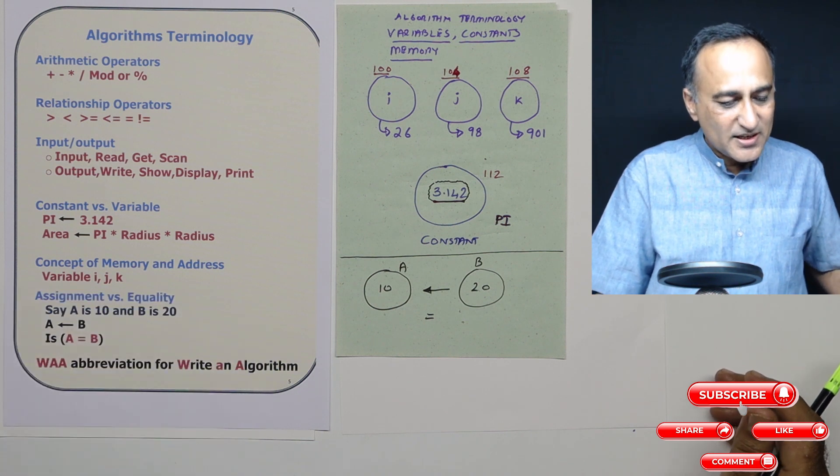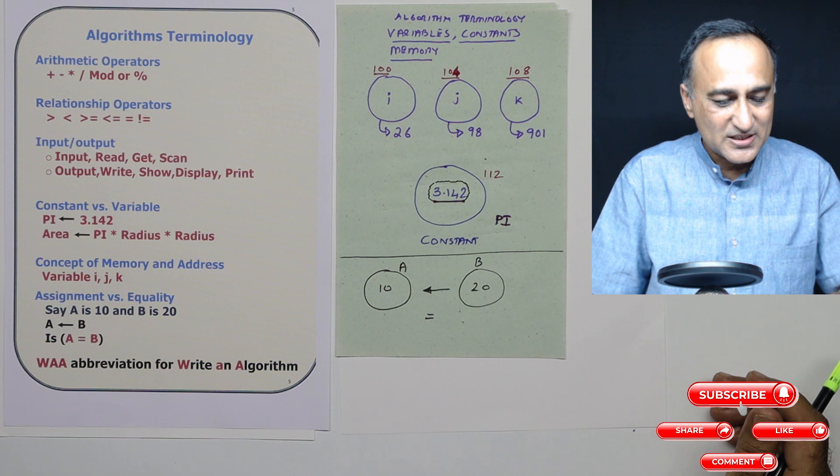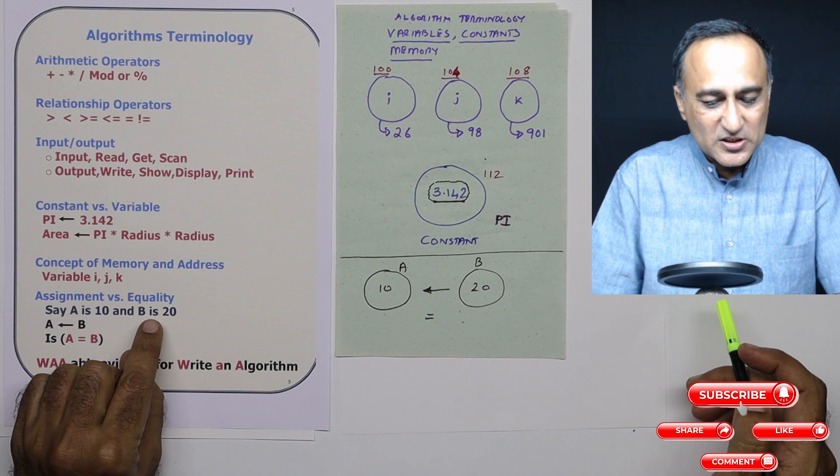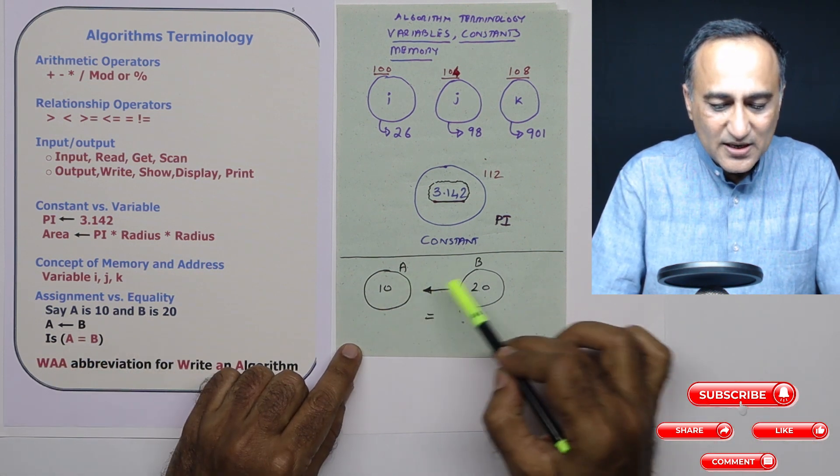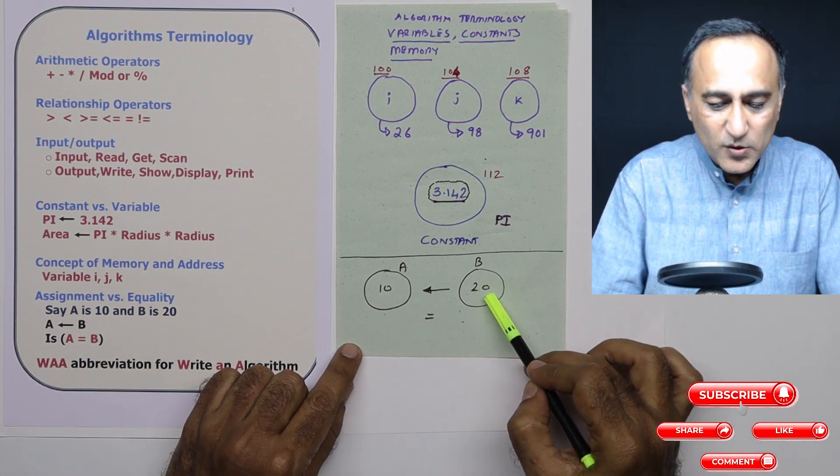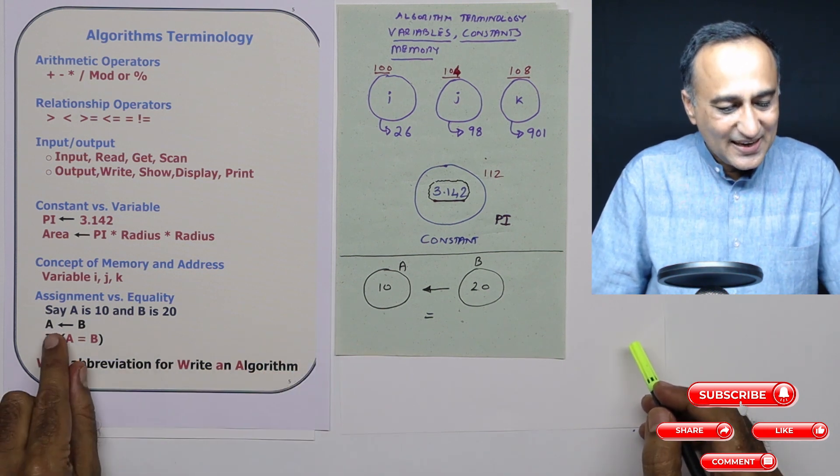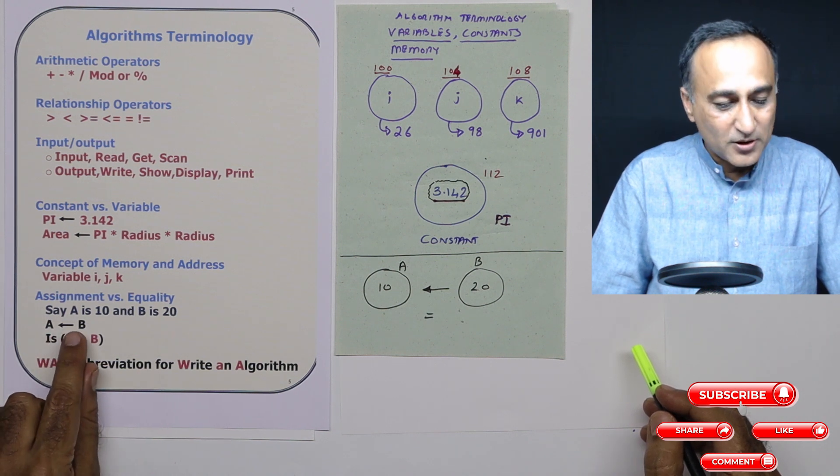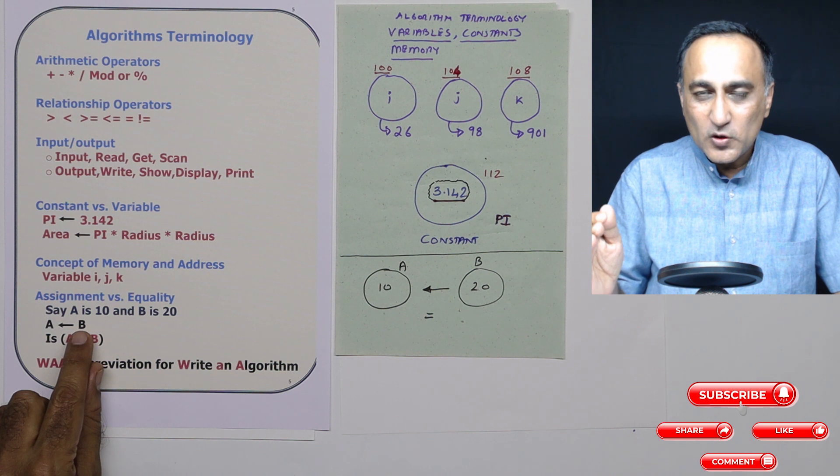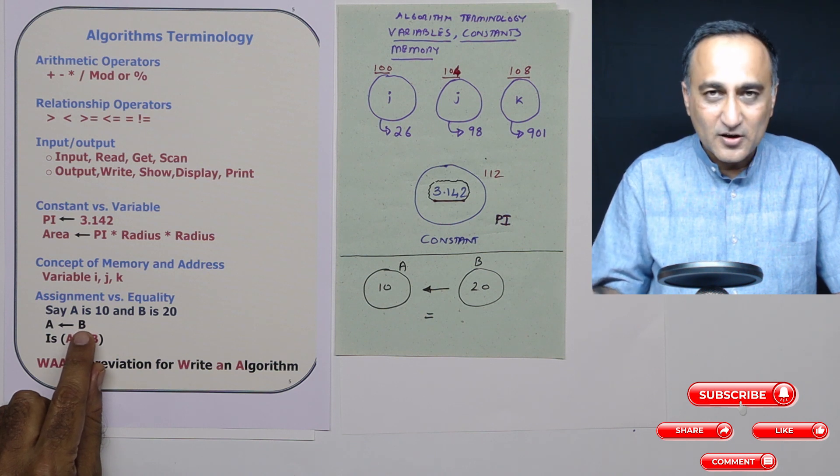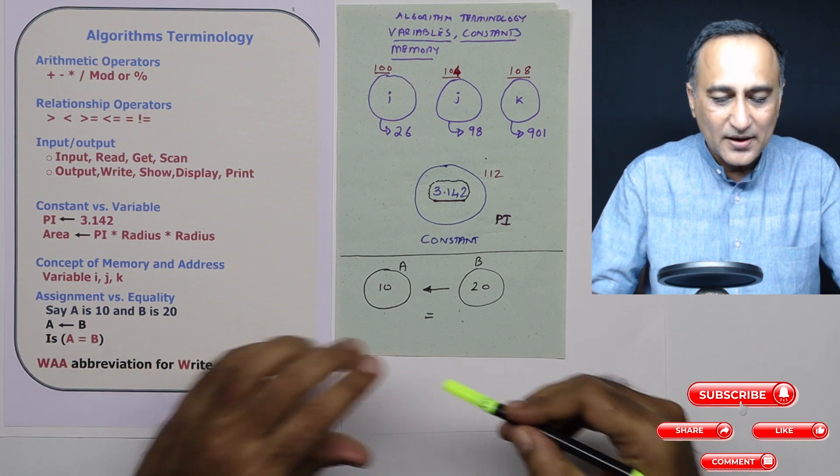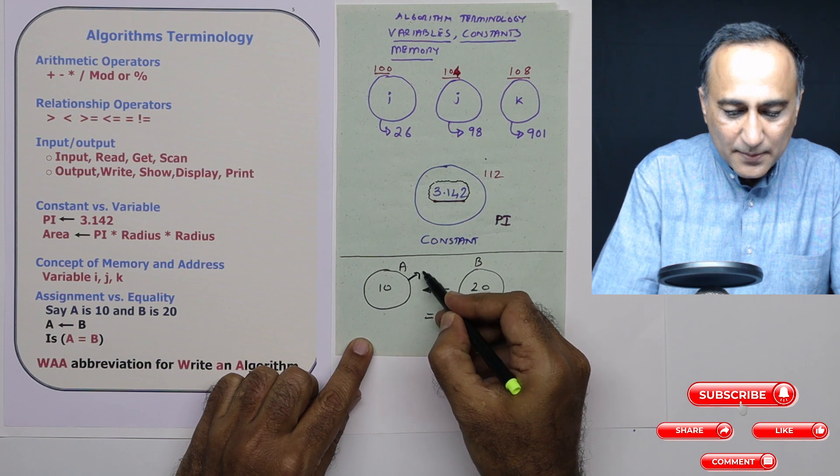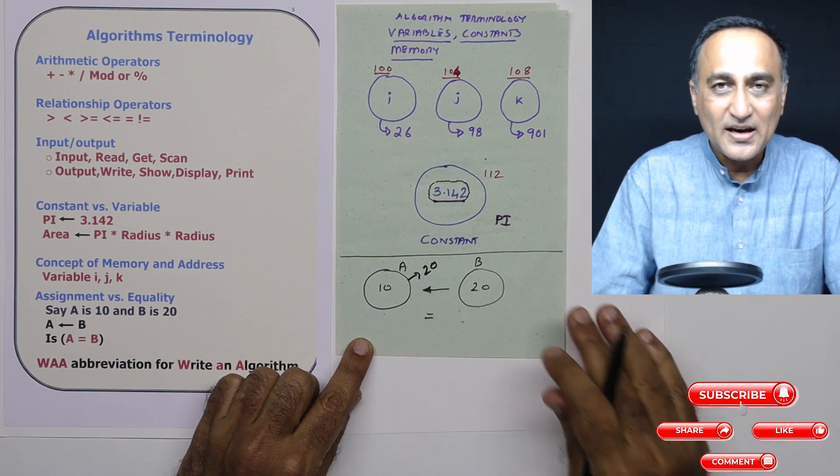Now let's try to understand one important difference between what is an assignment versus an equality. This is really important. Suppose A is 10 and B is 20. So in memory location A, the value is 10; in memory location B, the value is 20. Suppose I say A is assigned B - this arrow indicates the assignment symbol. That means the expression or the values on the right are resolved and the single value is copied to A. So if A is assigned B, then what will happen is A also will end up becoming 20 and the value of B will remain unchanged.